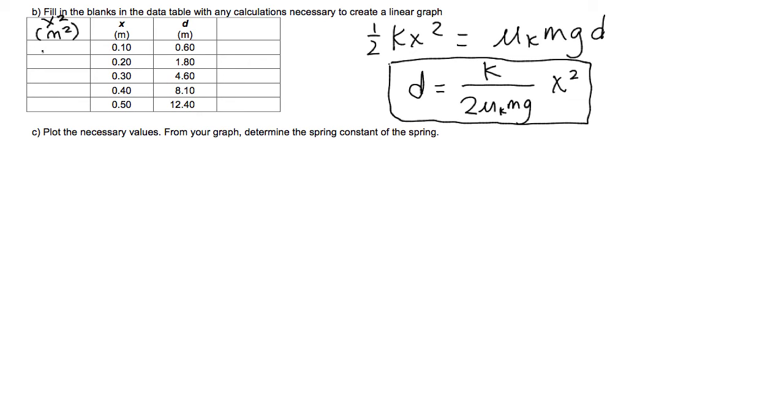0.1 squared is 0.01. 0.2 squared is 0.04. And 0.5 squared is 0.25. And then what I'm going to do is I'm going to graph d, these values, versus these values, the x squared values.